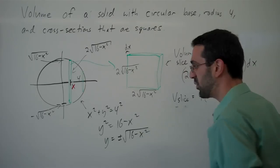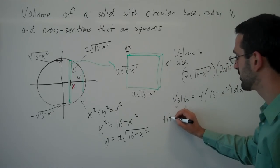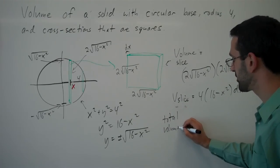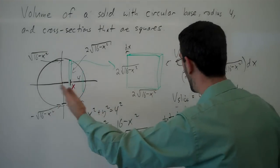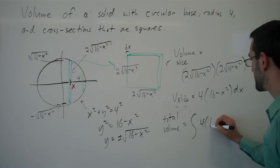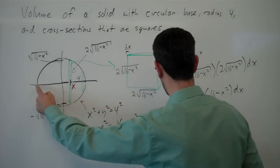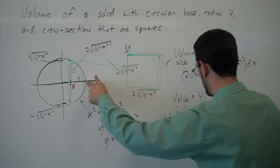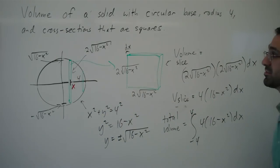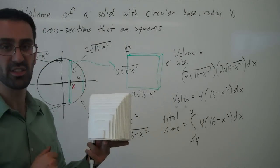So that's the volume of any one slice here. Now we can go ahead and find the total volume of our solid by adding up all of these little slices. So we're going to integrate, we're going to add up all these little slices for x values starting at the left side, so at an x value of negative 4, coming all the way over here to an x value of 4. And this integral will give me the volume of this strange solid with a circular base and whose cross sections are squares.